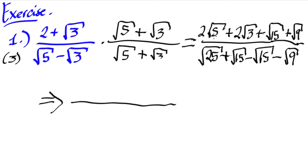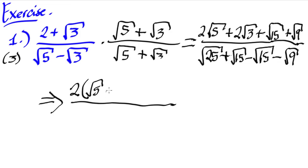Let's simplify the numerator first. We have two square root of five plus two square root of three. We can't combine these directly, but we can apply common monomial factoring — taking the two from both terms.